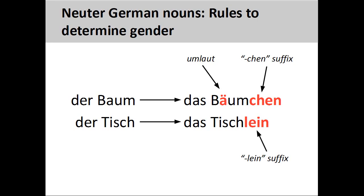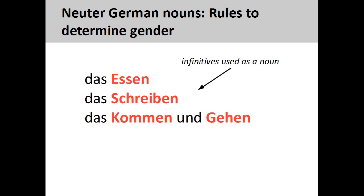There are also numerous dialect variations of the diminutive suffix. All infinitive verbs used as a noun — which requires the first letter of the verb to be capitalized — will be neuter. For example, 'Essen' (food), 'Schreiben' (document or writing), and 'das Kommen und Gehen' (the act of coming and going) are all neuter.